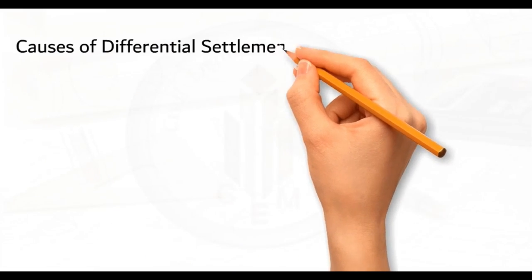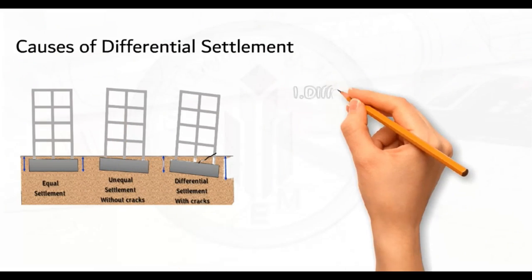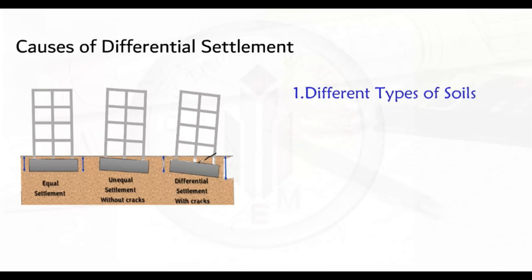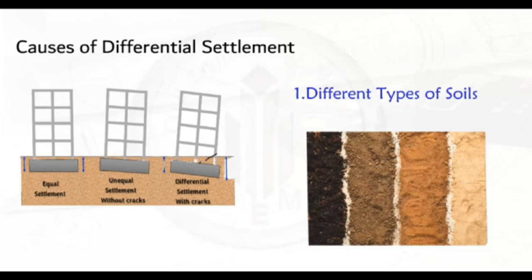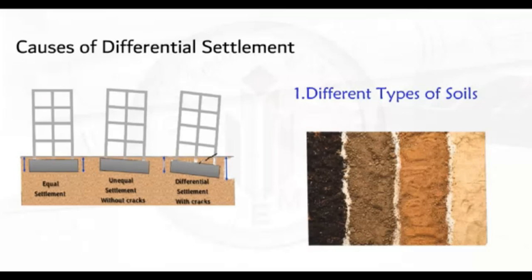Let's look into the causes of differential settlement. The first cause is different types of soil. Different soils have different compressibility properties, so if different types of soil are present beneath a foundation, they will settle at different rates. For example, clay soils tend to be more compressible than sandy soils, so a foundation on clay soil will likely settle more than a foundation on sand.